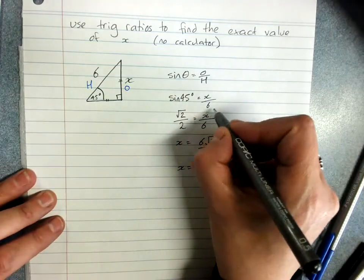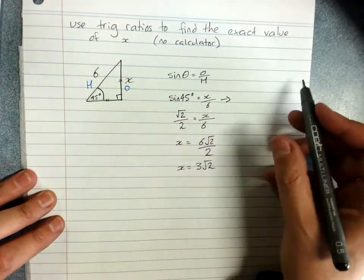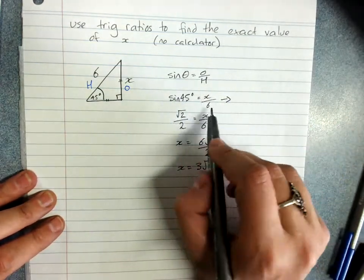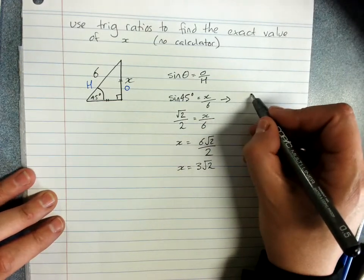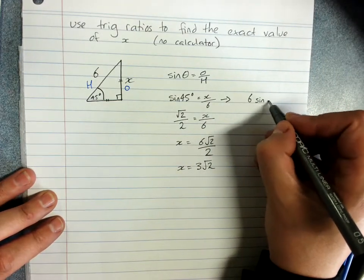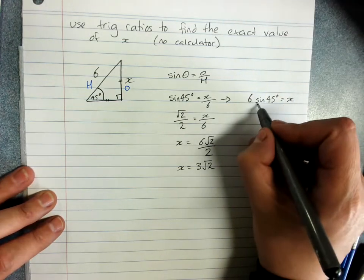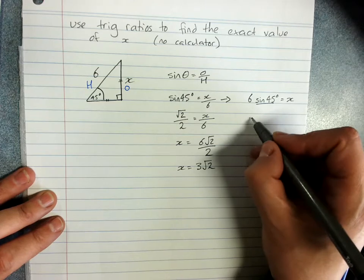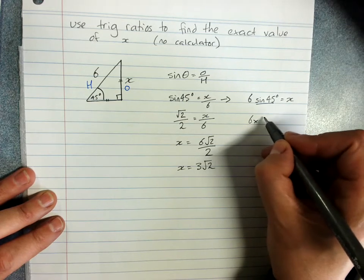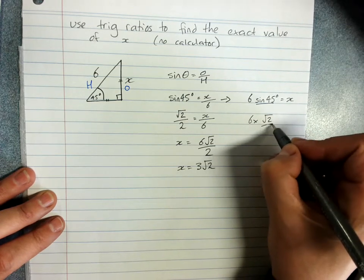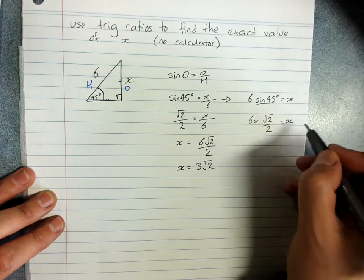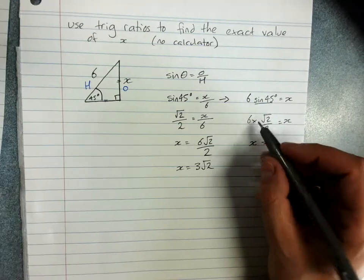If you preferred, at this point, you could continue to solve this the way that you normally would. 6 sine 45 degrees equals x, and then substitute in your exact value. So you have 6 times root 2 on 2 equals x. x equals, as we just worked out, 3 root 2.